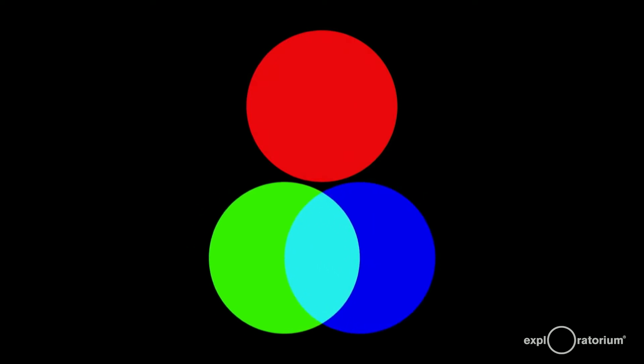Remember, the three primary colors are red, green, and blue. Let's add colors. Add green and blue, and where they overlap, you get a turquoise color we call cyan. Cyan equals blue plus green.